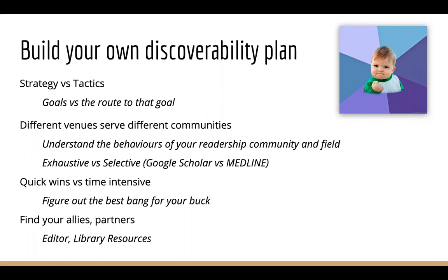Examples of goals: each journal that you have should be in at least one key database in the field. And then, thinking about the route to that goal, maybe you'll ask each journal editor to recommend a database. Get to know the landscape — different venues serve different communities. You could dig a little deeper into reader behavior, and poll your editors for the databases used most frequently in that journal's field. Figure out what you can do with the time that you have. It may be better to get all your journals into Google Scholar, EBSCO, and ProQuest than spend many hours submitting applications to selective databases that have a high rejection rate. You'll learn a lot about what it takes to get into these databases as part of that process.